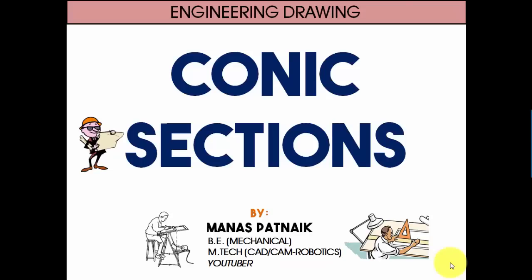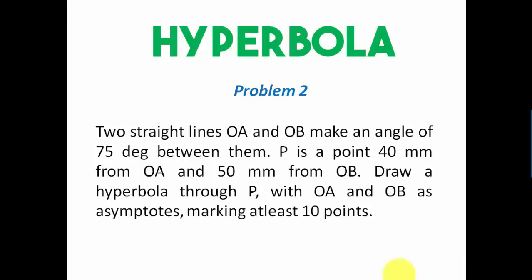Hi there guys, this is your friend and tutor Manas. Today we're taking up the second problem based on hyperbola. Two straight lines OA and OB make an angle of 75 degrees between them. P is a point 40 mm from OA and 50 mm from OB. Draw a hyperbola through P with OA and OB as asymptotes, marking at least 10 points.